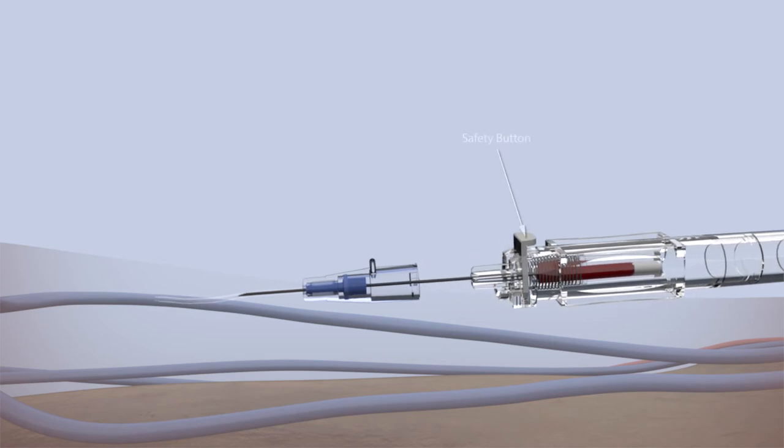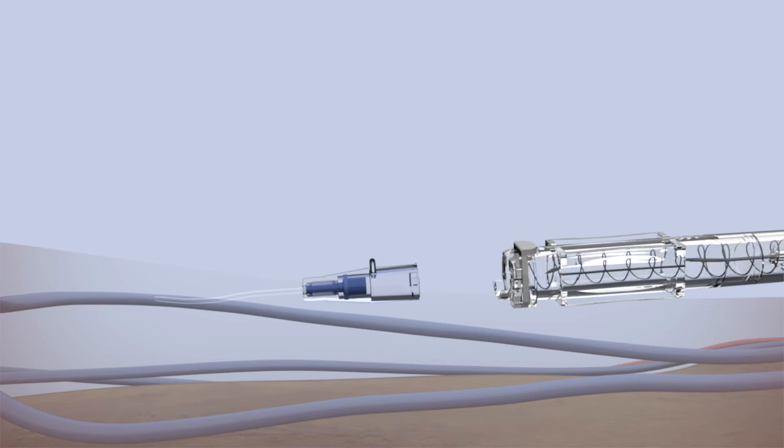Push the safety button, which is located on the top of the catheter's body. The active safety mechanism automatically retracts the needle inside the catheter chamber. An audible clicking sound indicates the needle is now safely sheathed and ready for disposal.